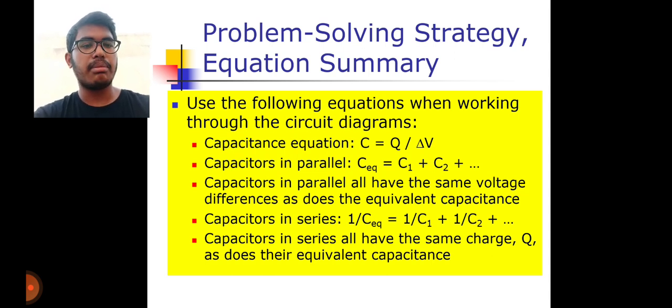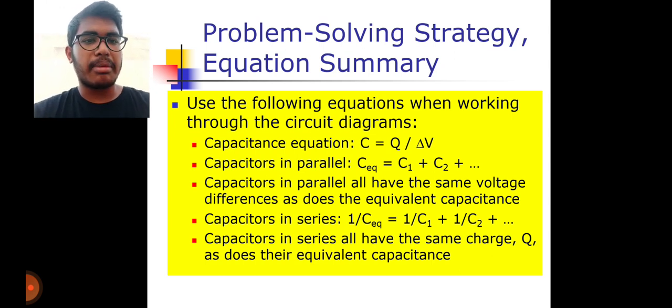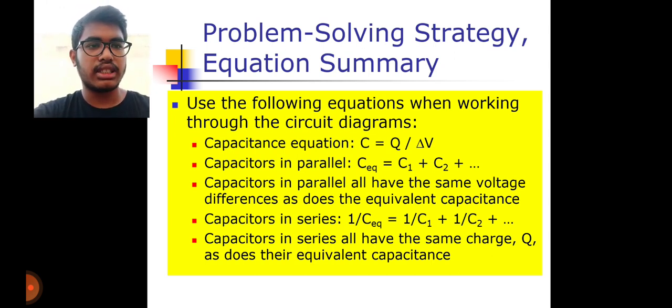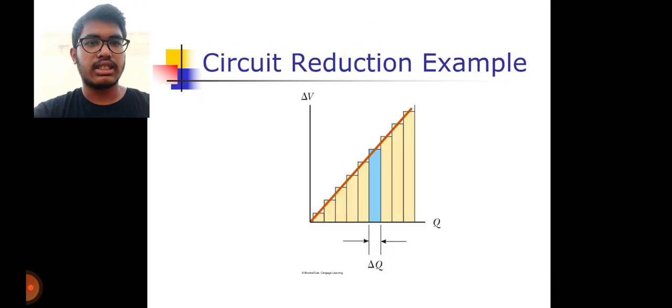In series: 1 over C equivalent equals 1 over C1 plus 1 over C2 plus 1 over C3. Capacitors in series always carry the same charge Q, as does the equivalent capacitance.